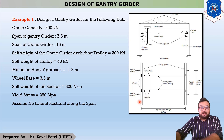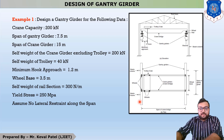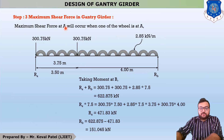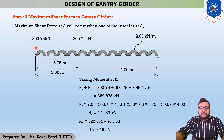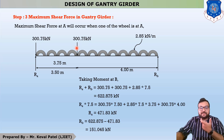Let us assume that our crane girder is stopping at the left support. You can see in step number 3 that your crane girder is resting on the left side. Whenever your crane girder is resting on the left side, your one wheel is at this end, and your second wheel is at a distance of 3.5 meters, because in the question it is clearly mentioned that the wheel base is 3.5 meters.